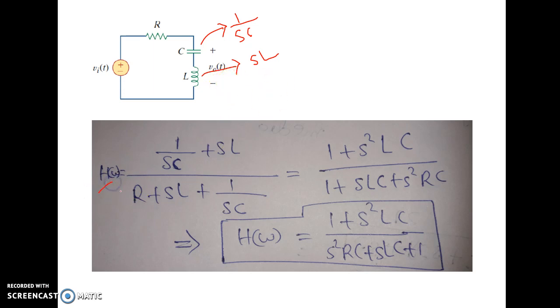What we will get? H of omega or H of S equal to V output of S by V input of S, that is equal to 1 by SC plus SL by R plus SL plus 1 by SC. By simplification, by taking LCM in the numerator and denominator,